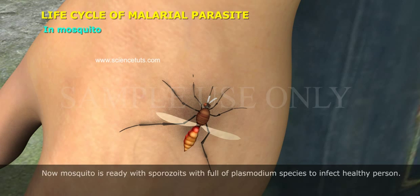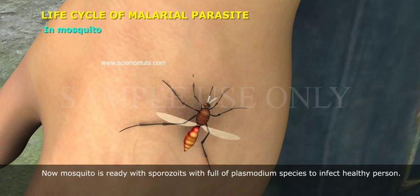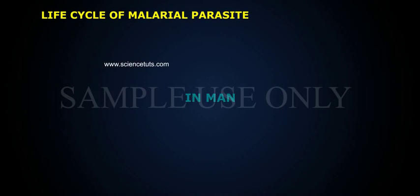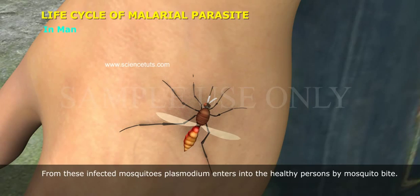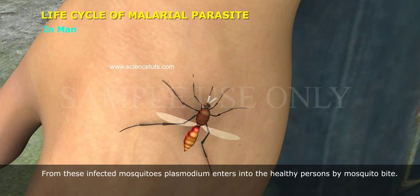Now the mosquito is ready, carrying sporozoites full of Plasmodium species, to infect a healthy person. From these infected mosquitoes, Plasmodium enters into healthy persons through a mosquito bite.